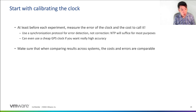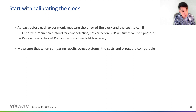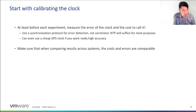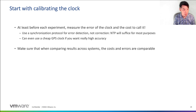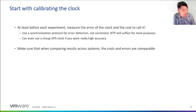For each experiment, we should take the time to measure both the error of the clock and the cost to call it. We can actually use existing systems like NTP for this — but instead of using NTP for error correction, we need to use it for error detection and report the error to the user instead of correcting the clock. If you want to be really precise, we've been able to do this with a cheap $10 GPS clock to calibrate, but to detect all the errors we just discussed, NTP is fine and probably all you get in the cloud anyway.